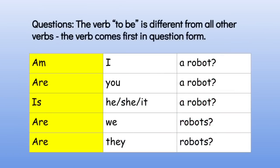Here are examples of questions with the verb 'to be' in the simple present tense. The verb 'to be' is different from all other verbs — the verb comes first in question form. Am I a robot? Are you a robot? Is he, she, or it a robot? Are we robots? Are they robots?